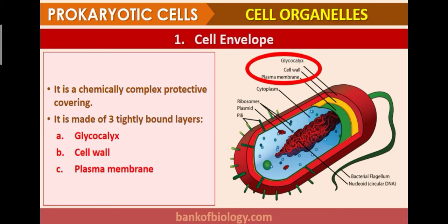First is the cell envelope — a chemically complex protective covering of the cell. It is made up of three tightly bound layers. As shown in the picture by red, yellow, and green colors: first is the glycocalyx (the red outer layer), second is the cell wall, and third is the plasma membrane — the semi-permeable membrane.